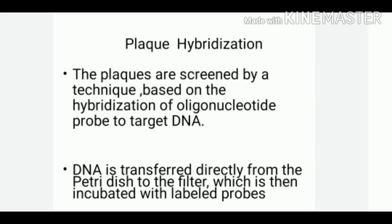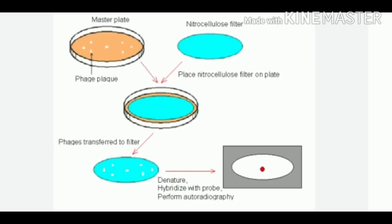Plaque hybridization is a technique in which plaques are screened based on hybridization of an oligonucleotide probe to the target DNA. The procedure of plaque hybridization is quite similar to that of colony hybridization. The technique involves hybridization of isolated phage DNA to a labelled probe for the gene of study, followed by autoradiography to detect the position of the label.